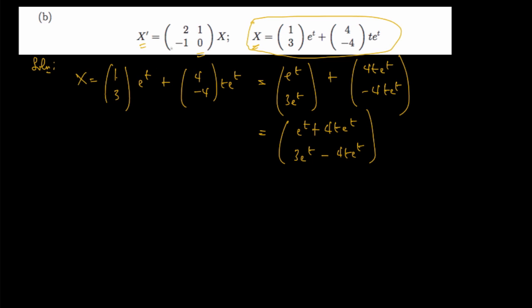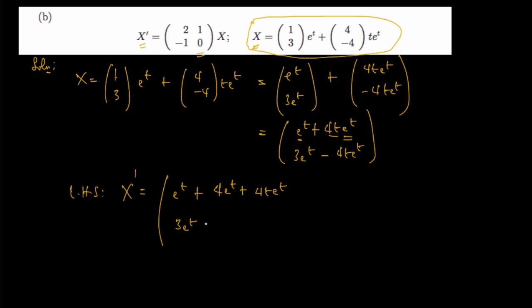Now let's verify it's a solution. For the left-hand side, we need x prime — the derivative of each entry in the column matrix. The derivative of e^t is e^t. For the entry 4t·e^t, we apply the product rule, giving 4e^t + 4t·e^t. For the second entry 3e^t - 4t·e^t, the derivative is 3e^t - 4t·e^t - 4e^t.